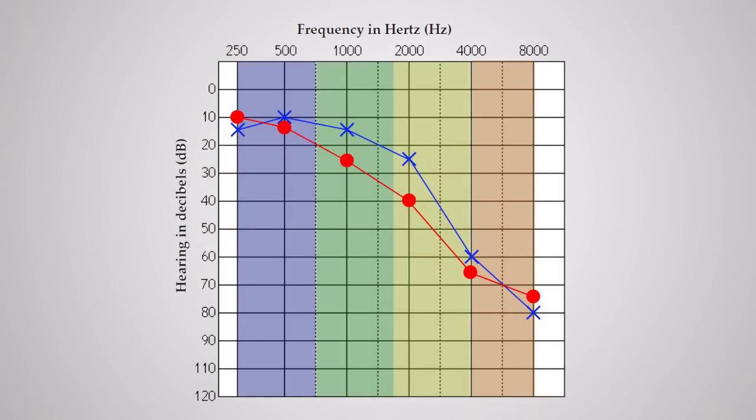For example, an aid with 4 channels might be set up as follows. Channel number 1, 250 Hz to 750 Hz. Channel number 2, 750 Hz to 1,750 Hz. Channel number 3, 1,750 Hz to 4,000 Hz. Channel number 4, 4,000 Hz to 8,000 Hz.